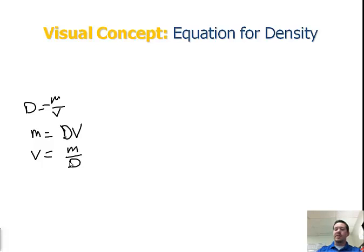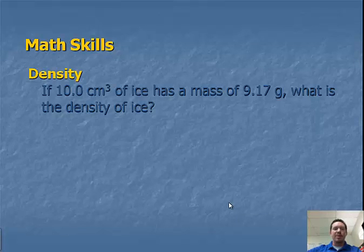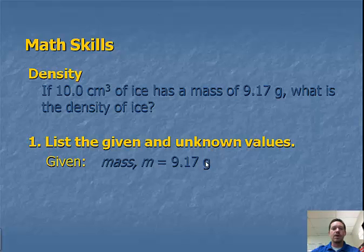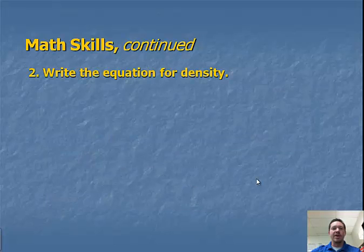So on the next slide, we can run through an example problem. If we've got 10 cubic centimeters of ice, so we've got a volume of ice, has a mass of 9.17 grams. What is the density of ice? So we're going to list our given and unknown values. Mass is 9.17 grams, our volume is 10.0 cubic centimeters, and density is what we want to find, so that's our unknown.